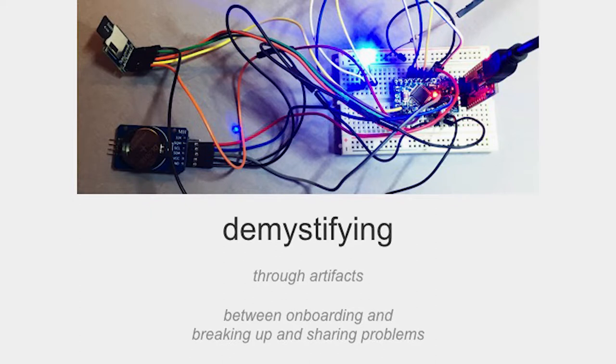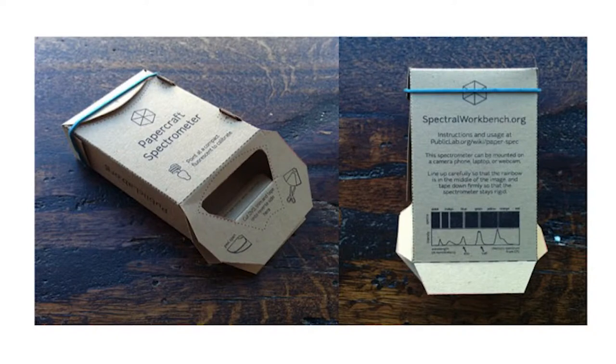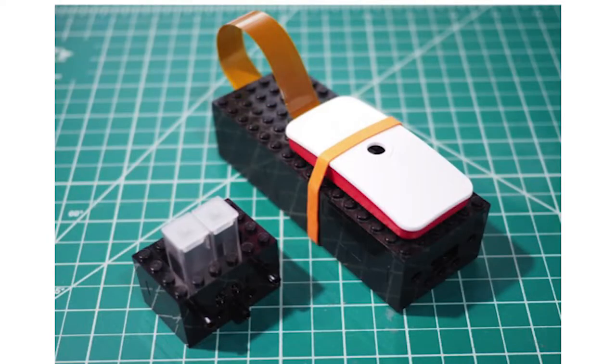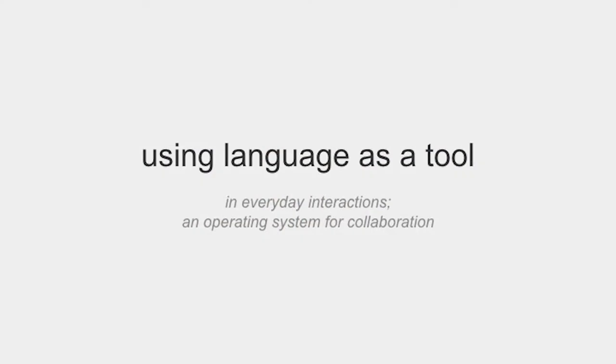Demystifying is another way we approach this. One of our better-known projects is a papercraft spectrometer that you can build — you can download the plans, it's all open source. The idea is to break down what instrumentation means through hands-on practice and through the selection of materials. There's another version of that kit made out of Legos. We speak through the choice of materials and through the language we use to describe these things, and that reflects our community values at Public Lab.